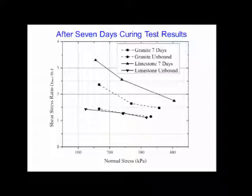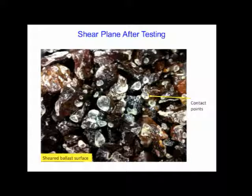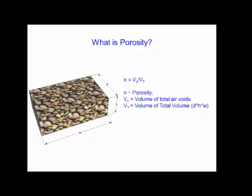To confirm this, we can look at the shear plane after testing — you can see the chemical bonds at the contact points. In real life we should be able to see this with porosity: porosity being volume of voids over total volume. In our tests, limestone porosity was around 39.5% and granite was around 41.2% — not a large enough difference to fully explain the results. So we ran discrete element modeling simulations to understand what was really going on.